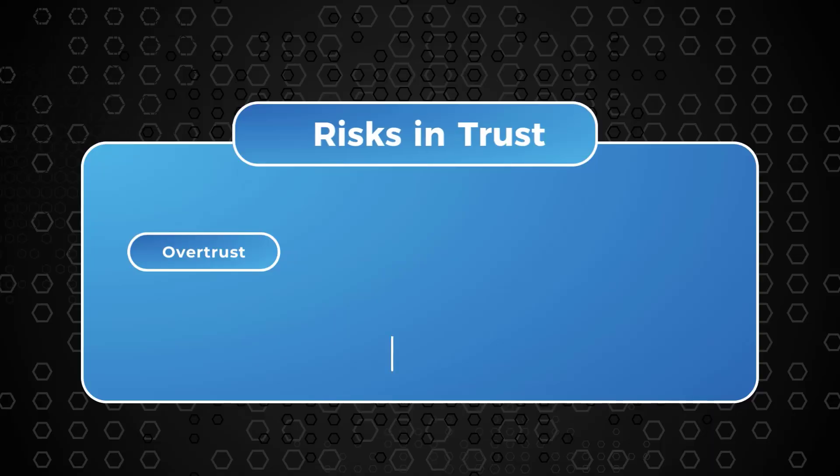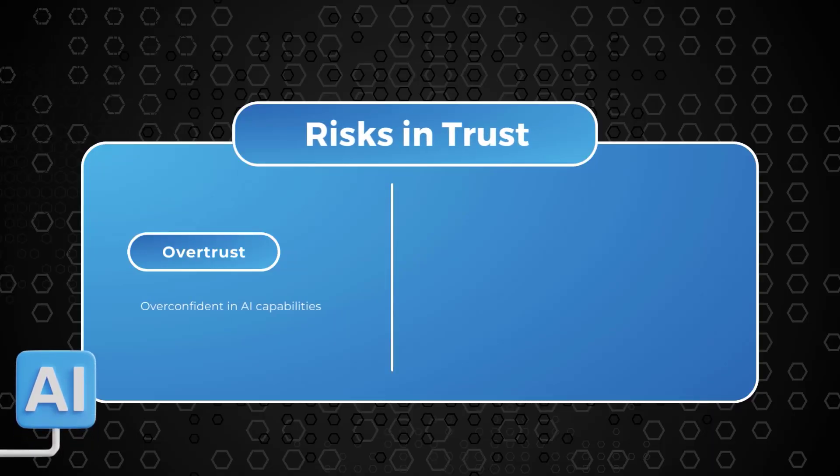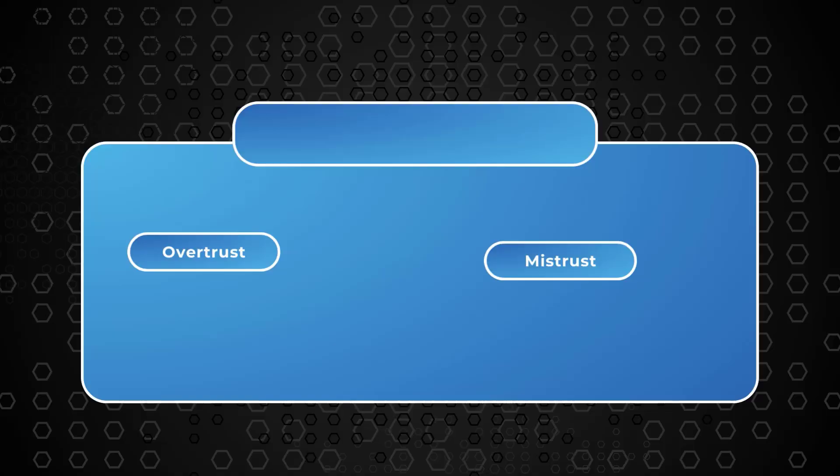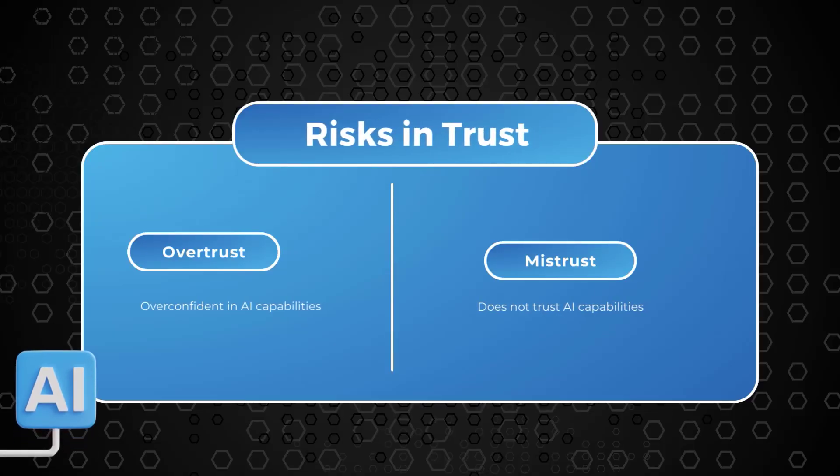There is one main risk whereby someone overtrusts the system and overestimates its capabilities. Or there is the other scenario whereby the user mistrusts the system — they do not trust the results they're getting, thinking this is AI and it is probably wrong. So how do you ensure a level of trust whereby a user does not overtrust or mistrust the application?